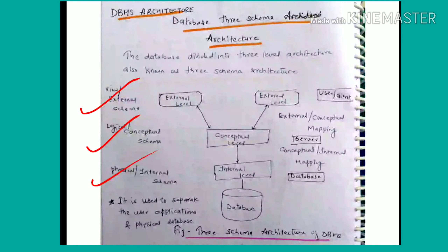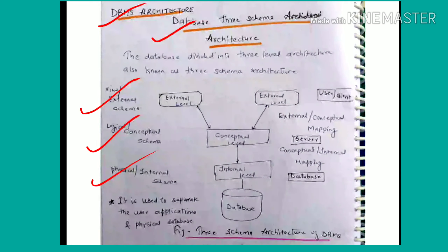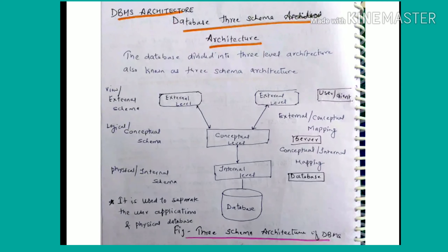So DBMS architecture — we are reading this in this video. The type of architecture is Database 3-Schema Architecture, which is divided into 3 levels. Why is it separated? It is used to separate the user application and the physical database. So why is this database architecture created in 3-level schema?